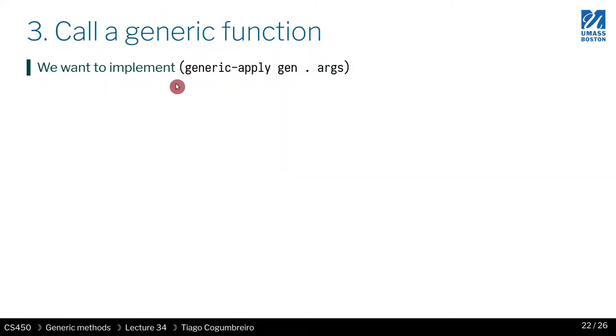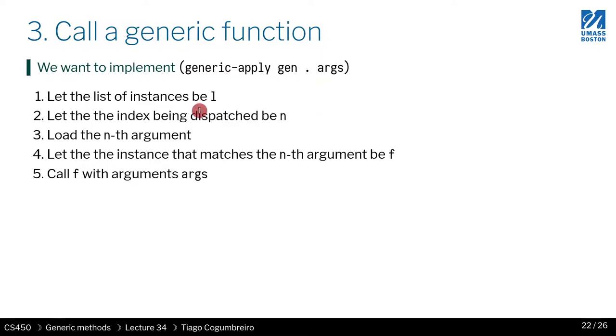So how do we call a function? Well, calling, we use generic apply. First argument has to be this generic object. And then we have the arguments that we are passing. Okay, so then what we need to do. Let's say you have certain, in this generic, this particular generic, you have some instances there that were registered.